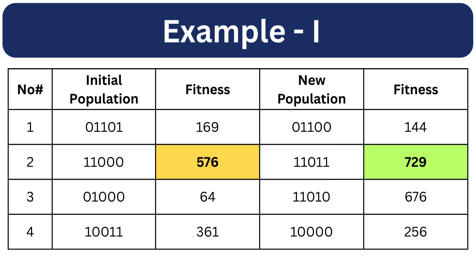This table compares the initial population and the population after one iteration of crossover and mutation. The highest fitness in the initial population was 576. But in the new population, the highest fitness is 729. Other individuals also have better fitness than the previous generation.